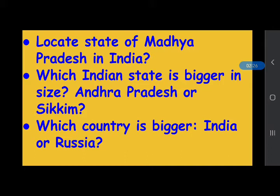Now open your atlas if you have one. If you don't have it, take help from the map given in your content book. Open the political map of the earth. I know you don't have a globe with you, so I will give you a picture — take help of that picture to find the things I will tell you.